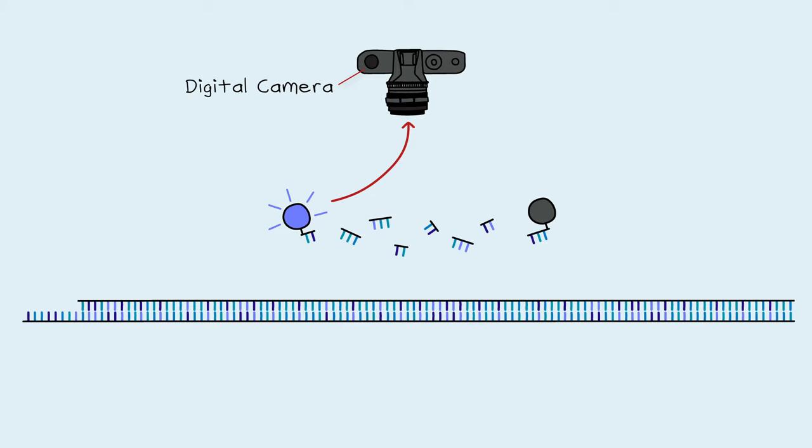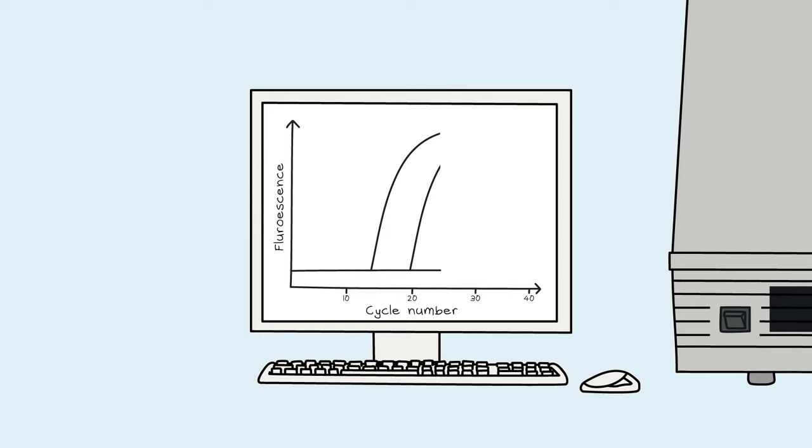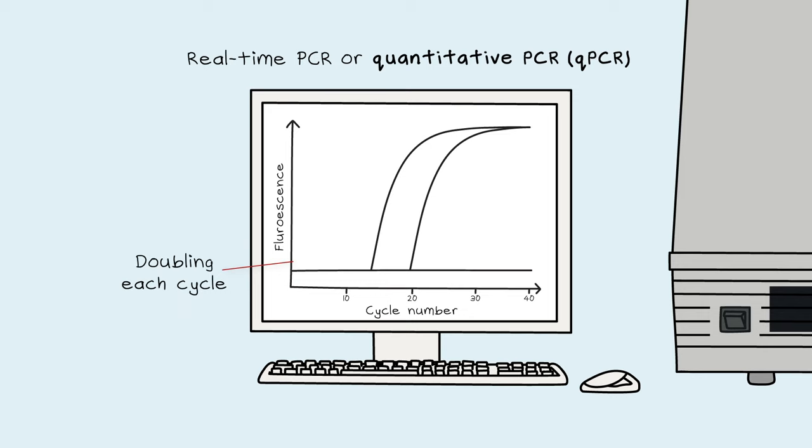The increase in DNA during PCR can be seen on the computer screen in real-time as the PCR is cycling. The power of real-time PCR, also known as quantitative PCR or qPCR, is to see when the PCR is doubling each cycle without stopping the reaction. In this doubling phase, the quantification of DNA is possible.